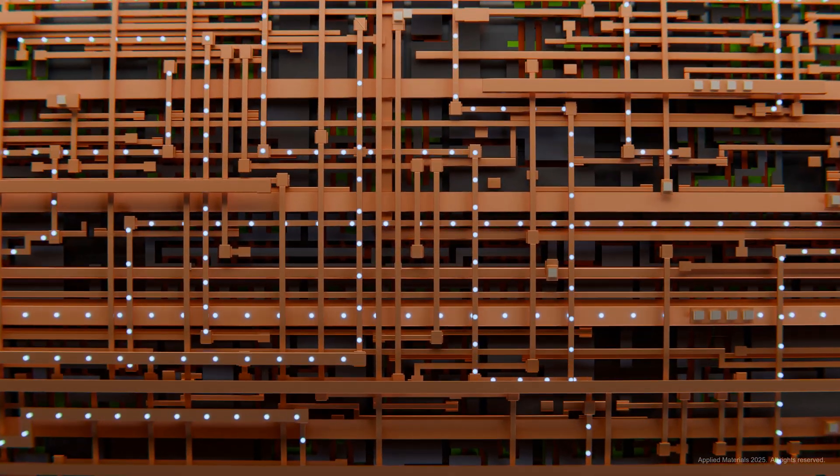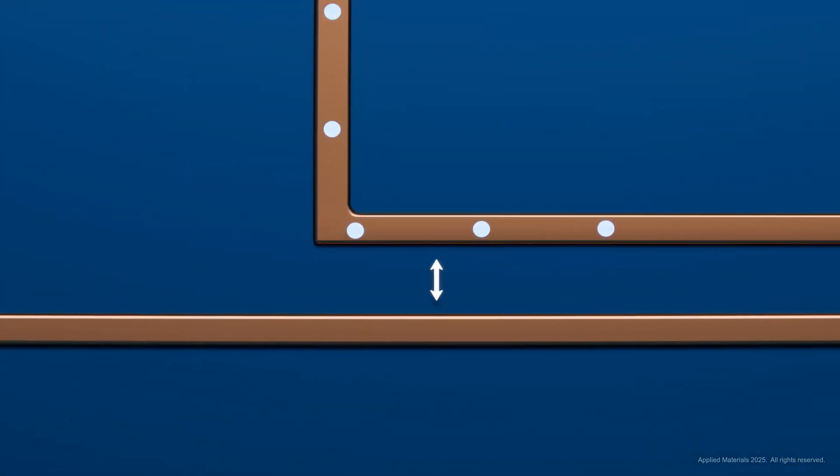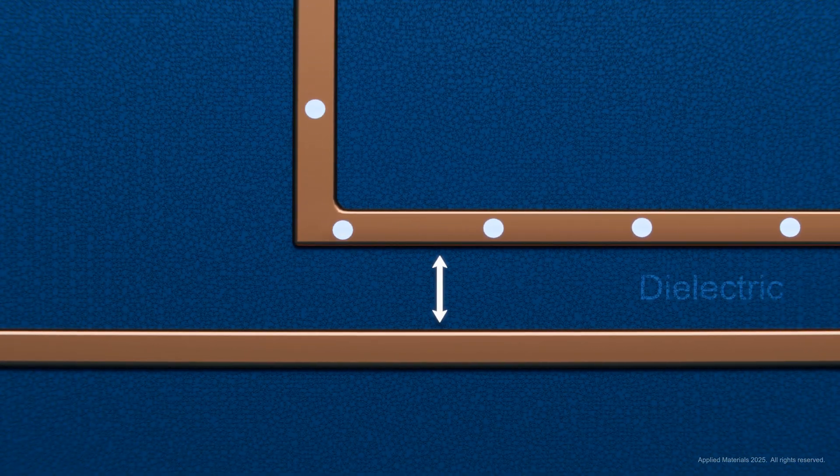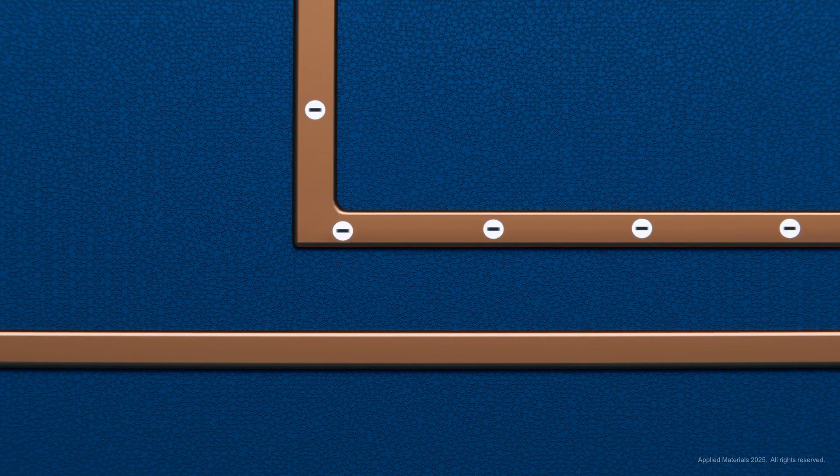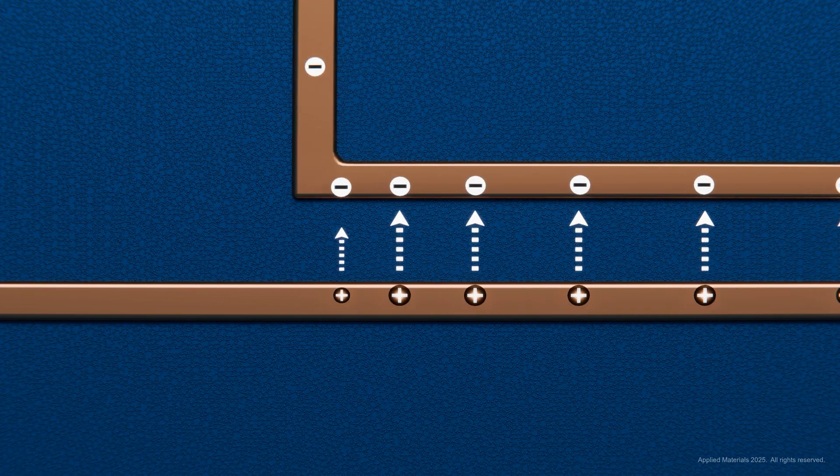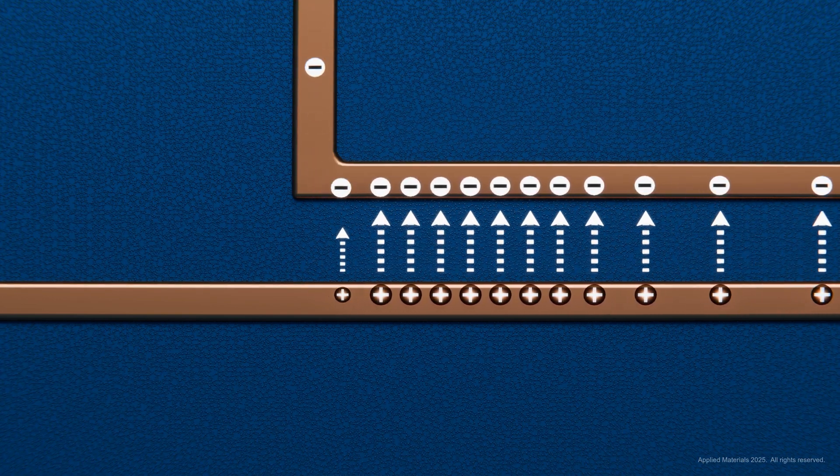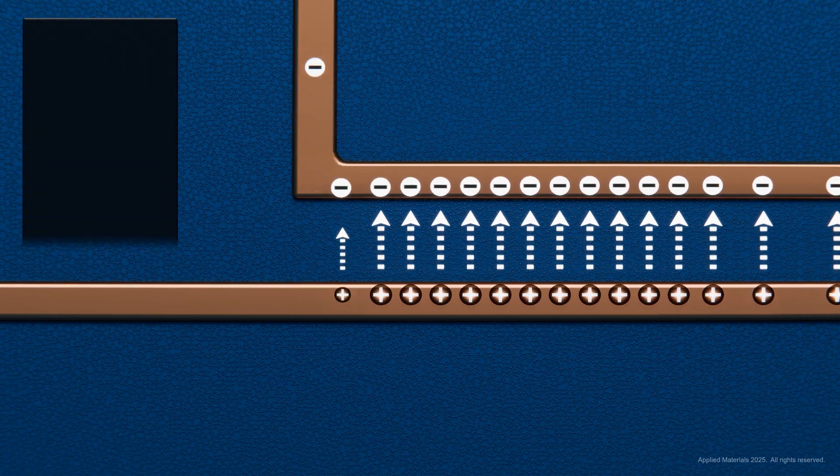Chip features are shrinking dramatically as we rapidly approach the two nanometer node. In the most critical layers, wires are separated by only a few nanometers of insulating dielectric material. This leads to a key challenge: a dramatic increase in parasitic capacitance, where strong electrical forces slow signals, delay transmission, and increase energy consumption.